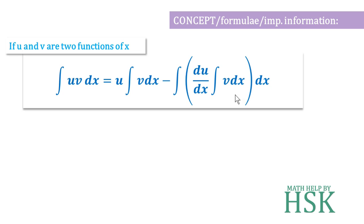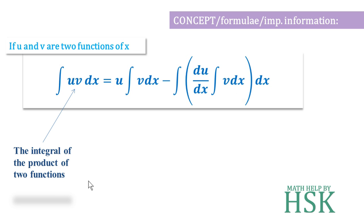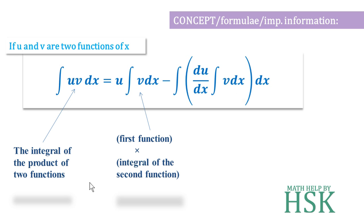Now, what does this formula mean? This formula means that the integration of the product of two functions is equal to the first function into integration of the second function. u, which comes before v in alphabetical order, is assumed as the first function, and v is the second function. The integration equals the first function written outside without performing differentiation or integration,